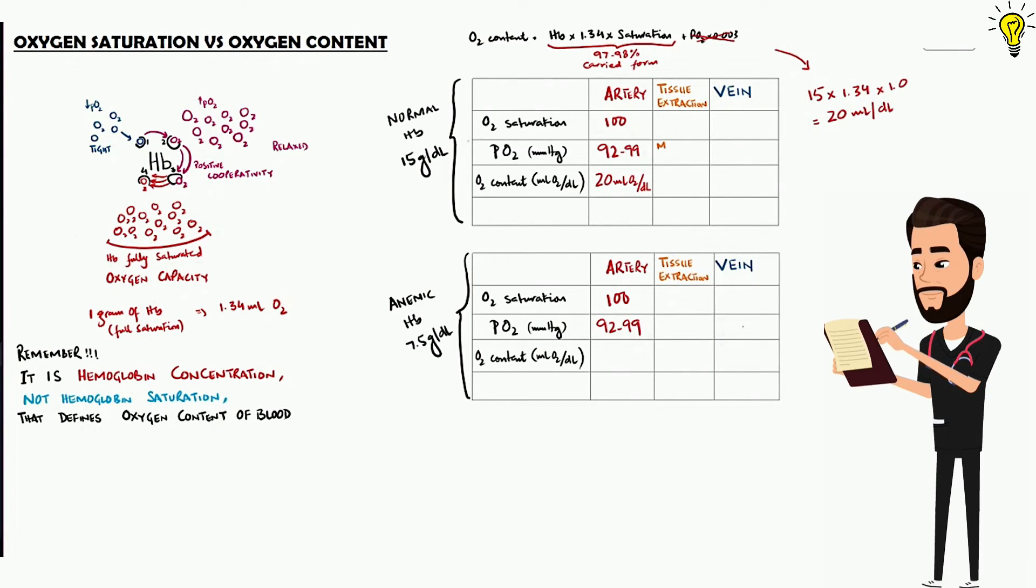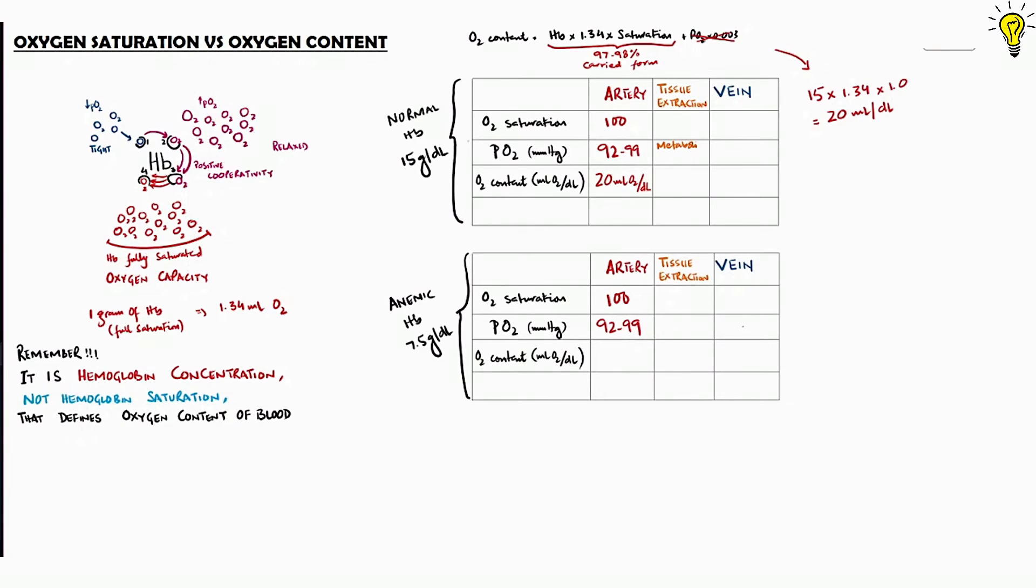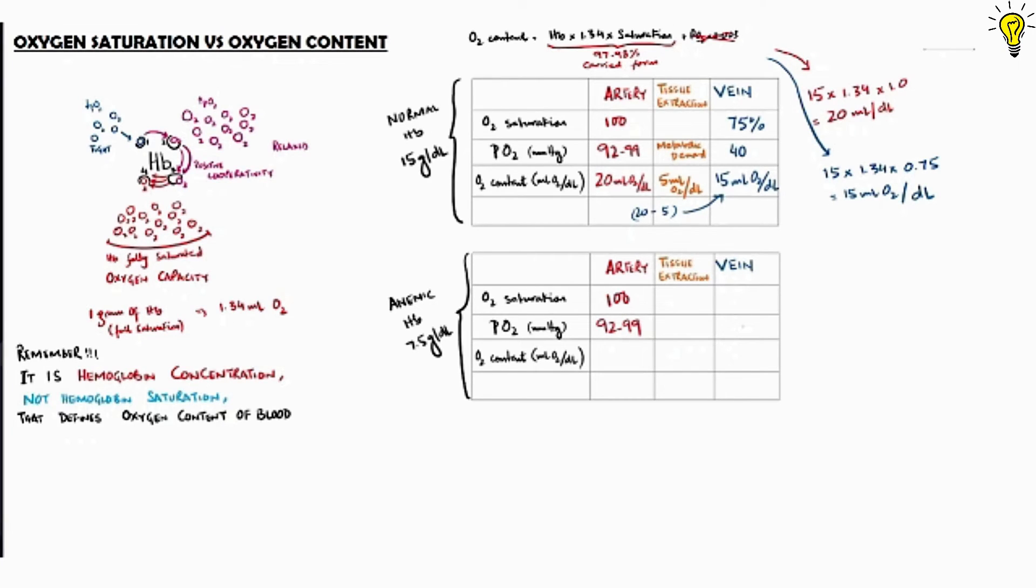Now the minimum oxygen extraction below which hypoxia occurs, also called the minimum metabolic demand of body, is 5 ml of oxygen per dl of blood. So tissue extracts 5 ml of oxygen from arterial blood. Now in normal case, veins have 40 mm of mercury oxygen pressure and 75% saturation as seen previously. So let's calculate the oxygen content in veins as 15 into 1.34 into 0.75 or 75% saturation equals 15 ml of oxygen per dl of blood. So 20 in arteries, 5 taken by the tissues, leaving behind 15 in veins.